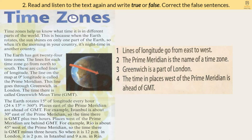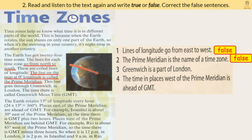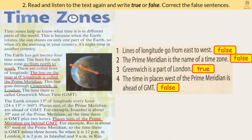Question 1: Lines of longitude go from east to west. Question 2: The prime meridian is the name of a time zone — this is false. The prime meridian is the line on the map at 0 degrees longitude. Question 3: Greenwich is a part of London — this is true. Question 4: The time in places west of the prime meridian is ahead of GMT — this is false. Places west of the prime meridian are behind GMT.